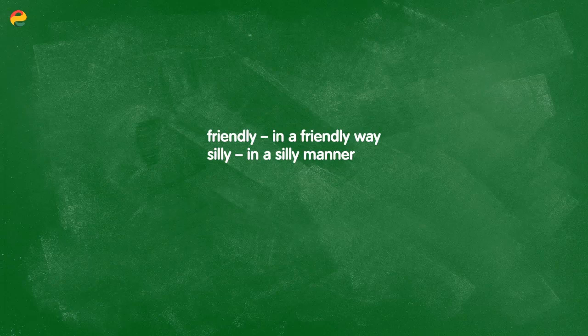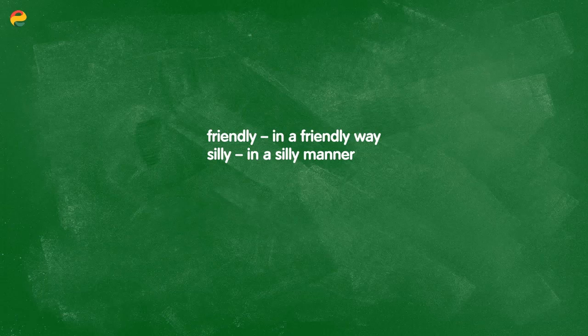Don't forget that there are also some adjectives that end in -ly, such as 'lonely'. These adjectives cannot become adverbs as such. However, there is a way to do this — we usually use the structure 'in a [adjective] way', and this functions the same way as an adverb. So, for example: in a friendly way, or in a silly way. We can also say 'in a silly manner' — these both mean the same thing; 'way' and 'manner' are synonyms.